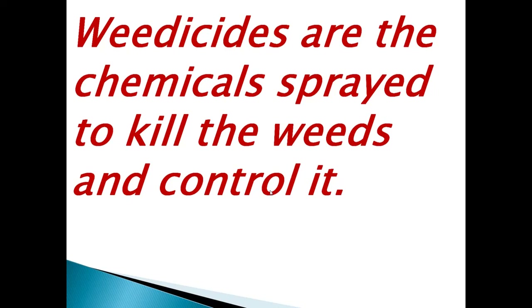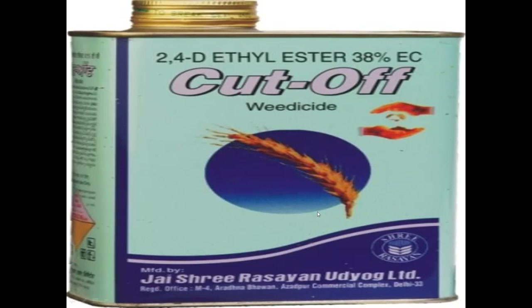The growth of weeds can also be stopped by using weedicides — chemicals sprayed to kill and control weeds. The chemical 2,4-D ethyl ester is used as a weedicide to kill and control weeds. This chemical is usually diluted and sprayed on the crops to stop weed growth.